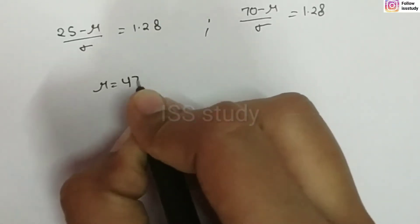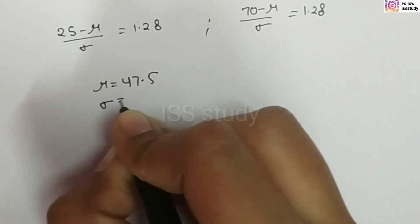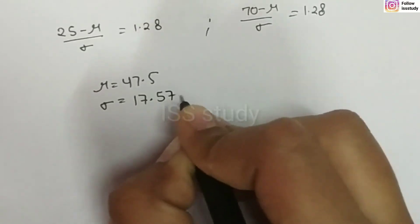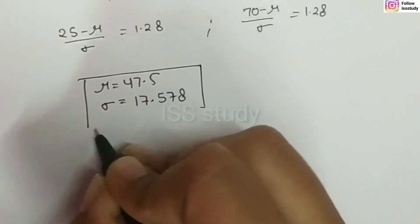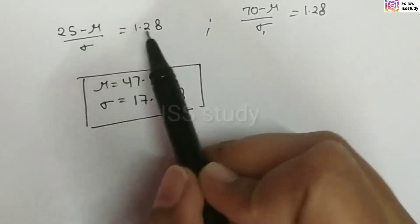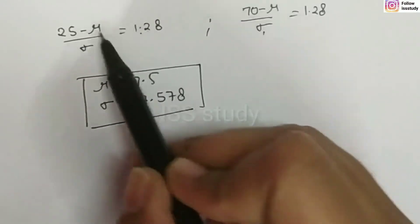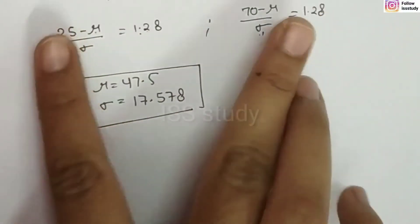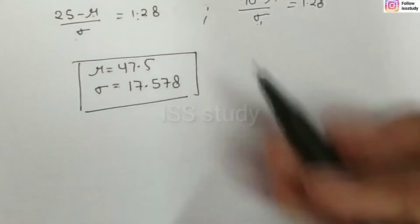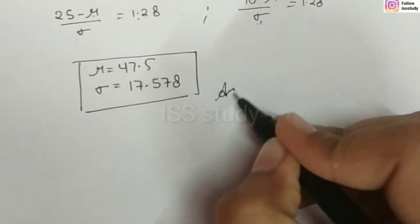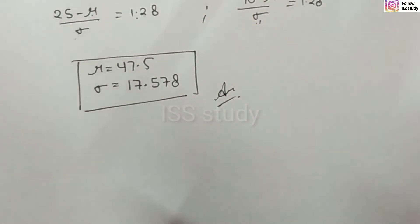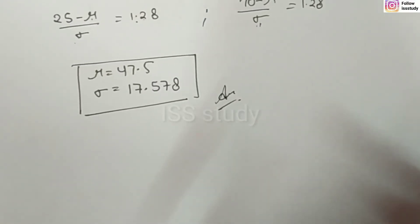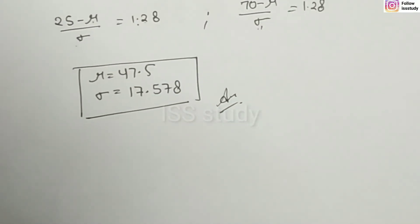When we solve both equations, we get: mu is equal to 47.5 and sigma is equal to 17.578. These are the answers. When you substitute the Z values, you get two equations in mu and sigma, and solving them gives the values of mu and sigma. I hope today's video was helpful. Please let me know in the comment box. Thank you for watching, have a nice day.